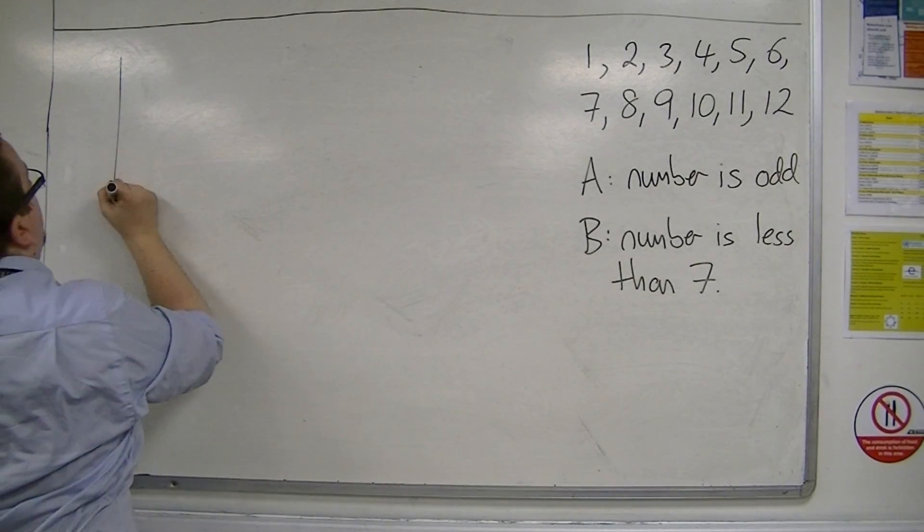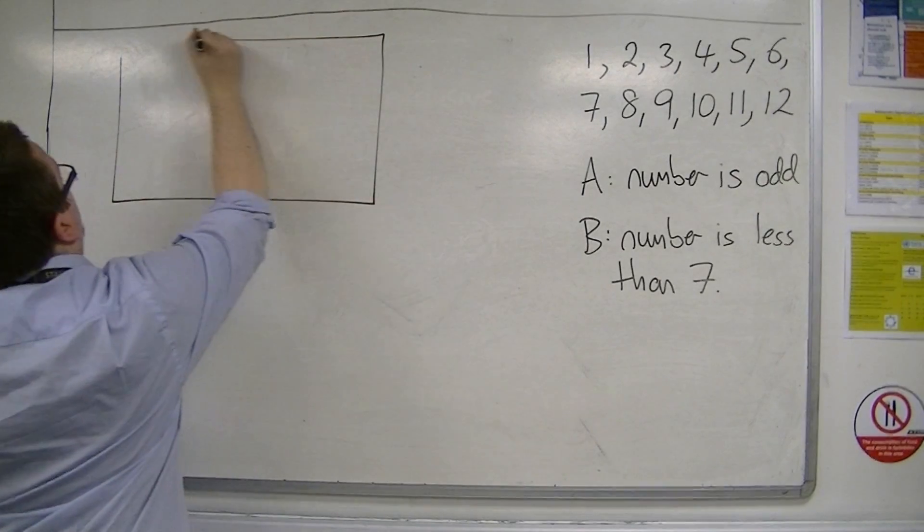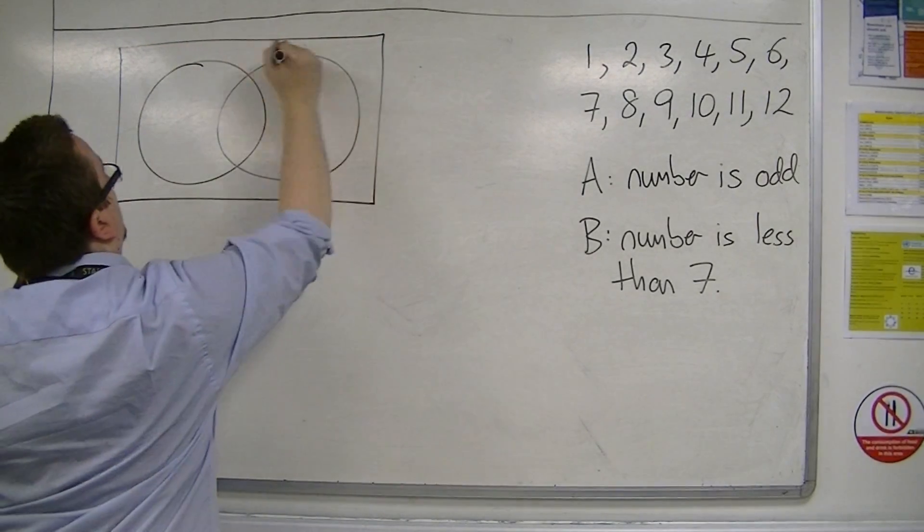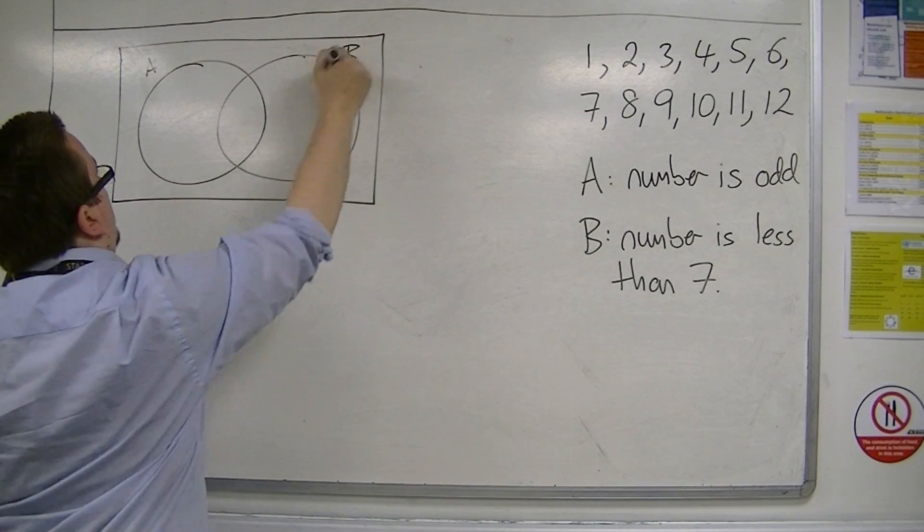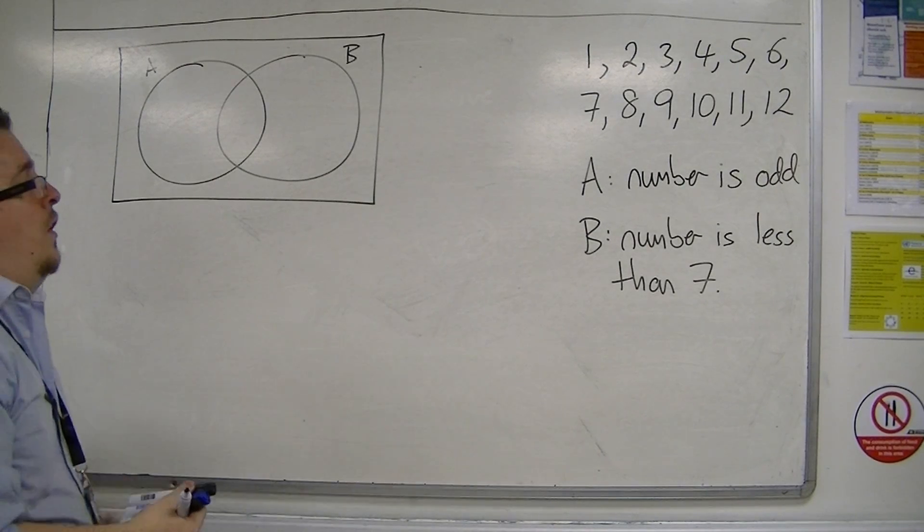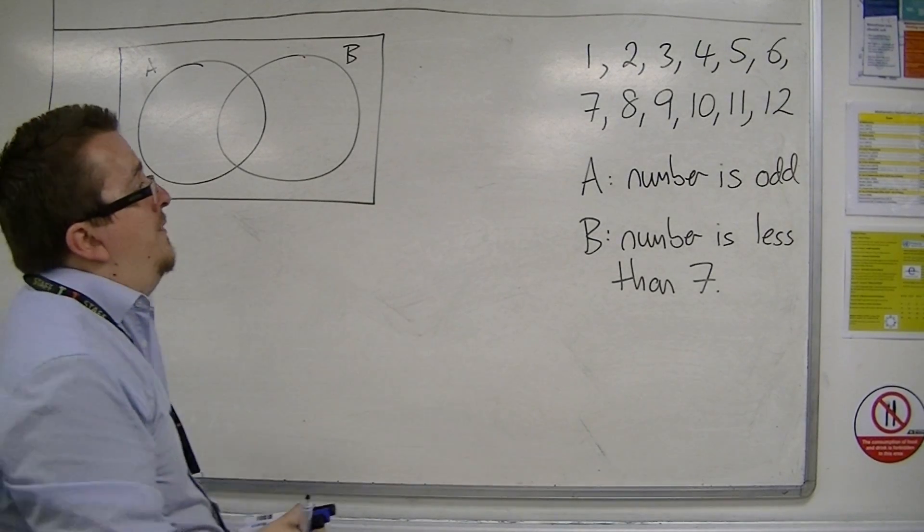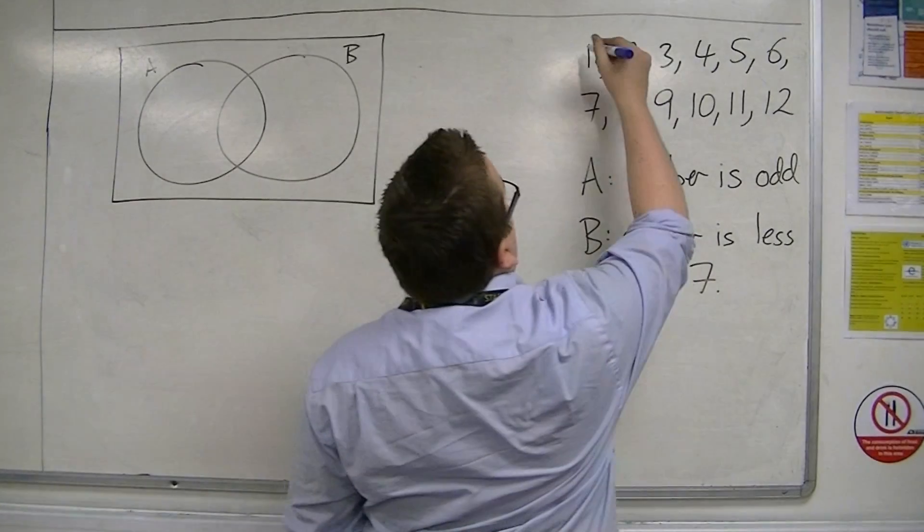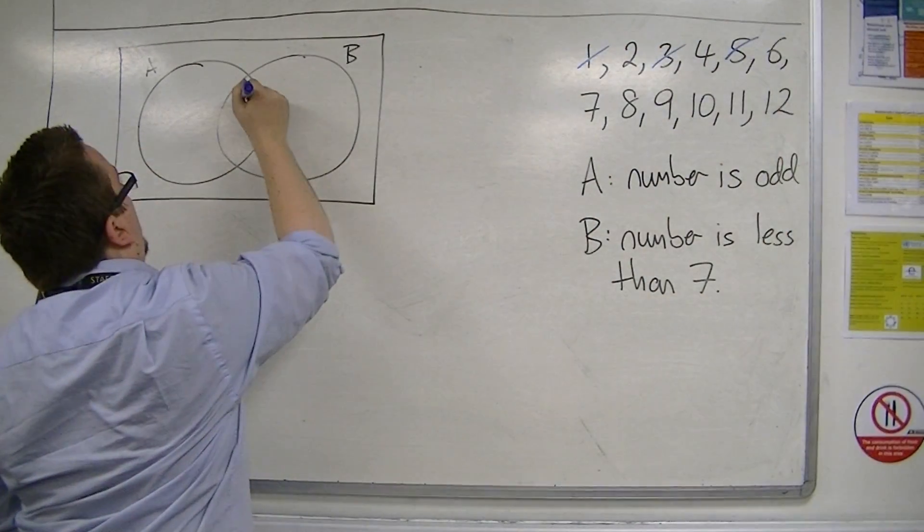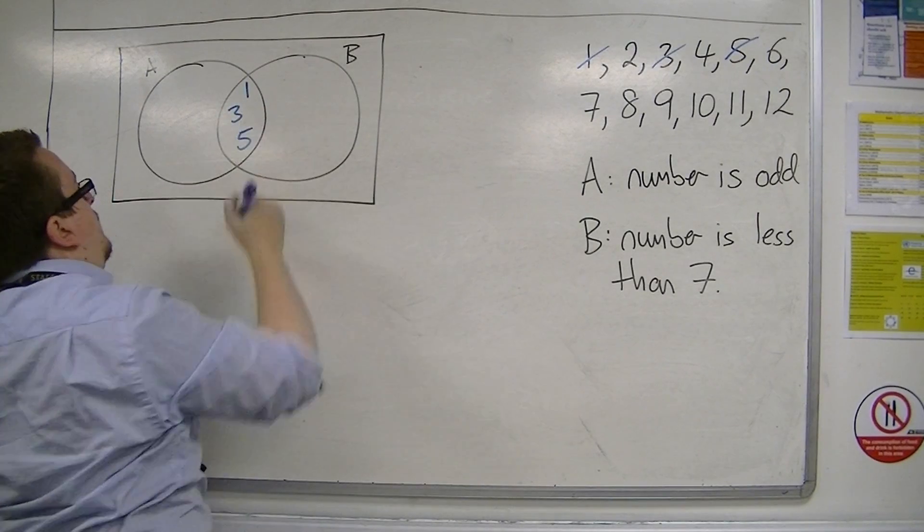We're going to draw a Venn diagram showing this information. So here's A, and here's B. Okay, so numbers that are odd and less than 7. So we've got 1, 3, and 5. So 1, 3, and 5 are in the middle.